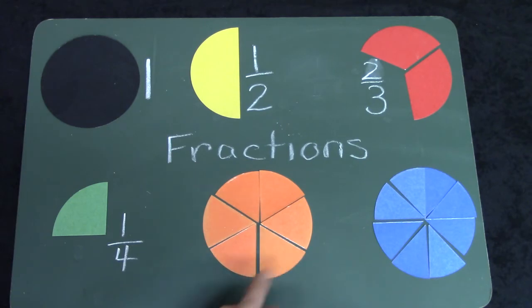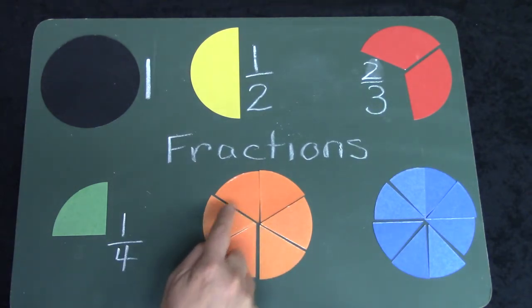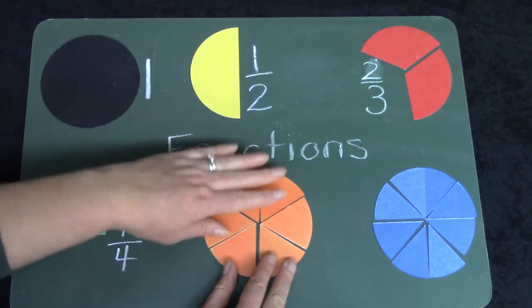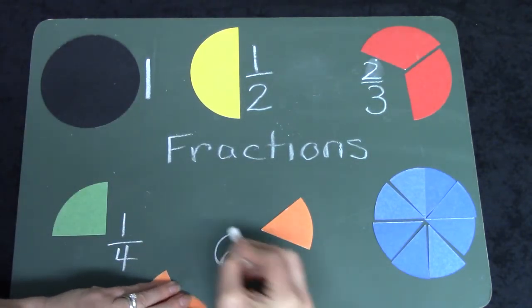And this one's a little bit smushed. Let's count them. One, two, three, four, five, six. I would need six pieces to make a whole circle.